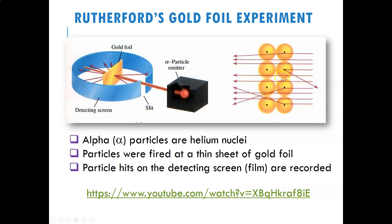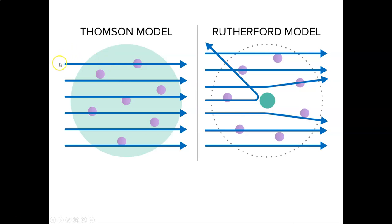That really told them that something strange was going on — they were not understanding what an atom looked like. What that started to tell them was that there was something inside these atoms that was very small but very dense — dense enough for these helium nuclei, these alpha particles, to hit and bounce off. If the Thomson model was correct, everything should have just gone straight through with nothing there to deflect the particles. Most of the particles went straight through, some grazed the edge and bounced a little, and once in a while some hit and bounced in a wacky direction.